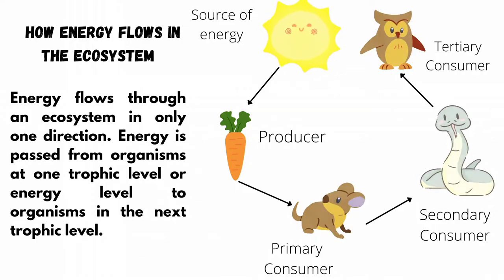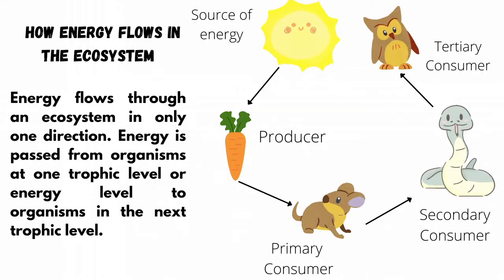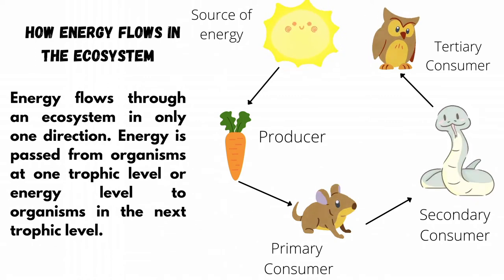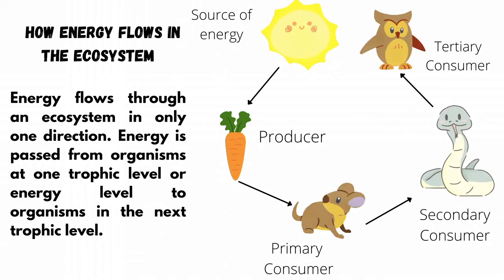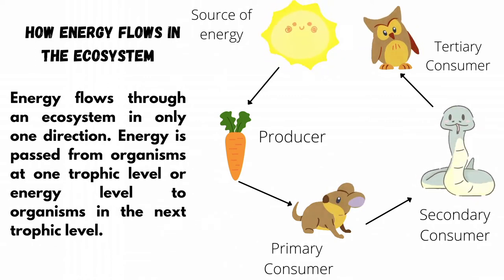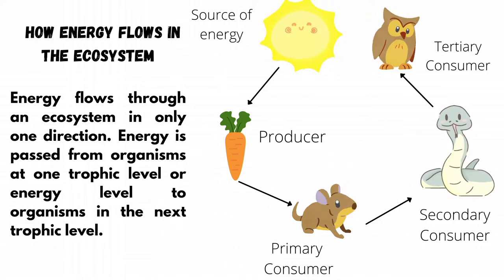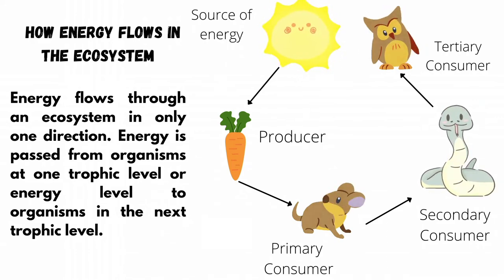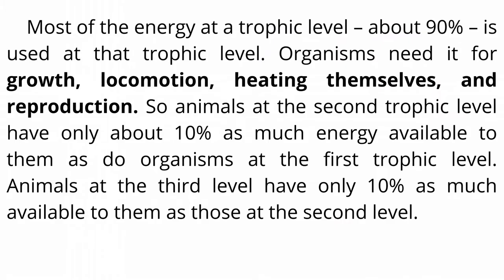Energy flows through an ecosystem in only one direction. Energy is passed from organisms at one trophic level to organisms in the next trophic level. Most of the energy at a trophic level — about 90% — is used at that trophic level.